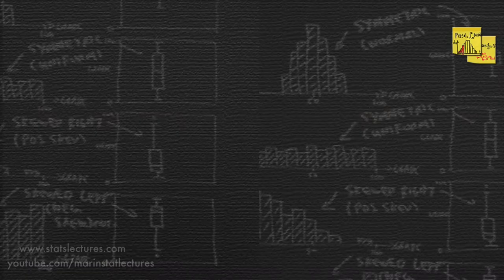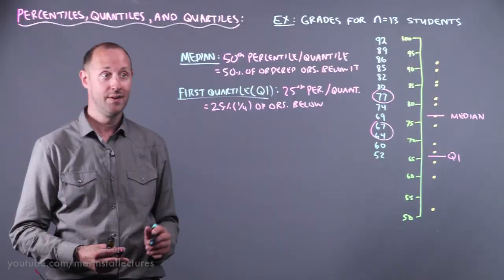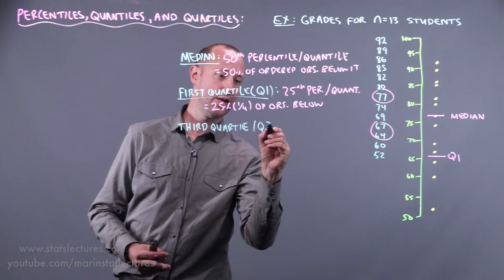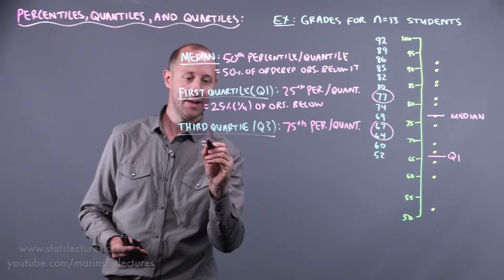Again, another important percentile or quantile is the 75th percentile. So again, this gets its own special name. It gets called the third quartile. The third quarter. So again, abbreviated Q3. And this here is the 75th percentile or the 75th quantile. And this has 75% or three quarters of observations below it.